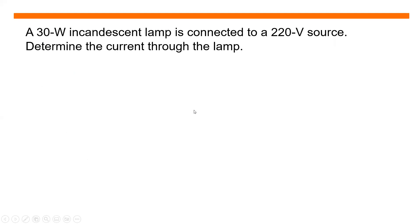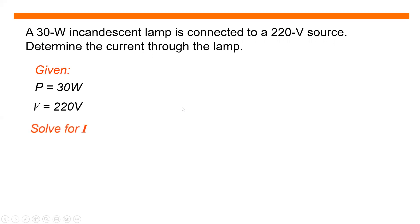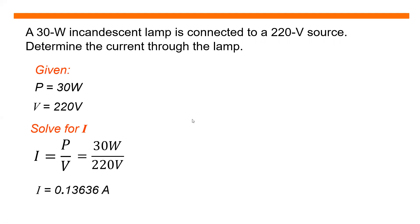A 30 watt incandescent lamp is connected to a 220 volt source. Determine the current through the lamp. Given: power equals 30 watts, voltage equals 220 volts. Solving for current: I equals power divided by voltage, that is 30 watts divided by 220 volts. I equals 0.13636 amperes, or simply 136.36 milliamperes.